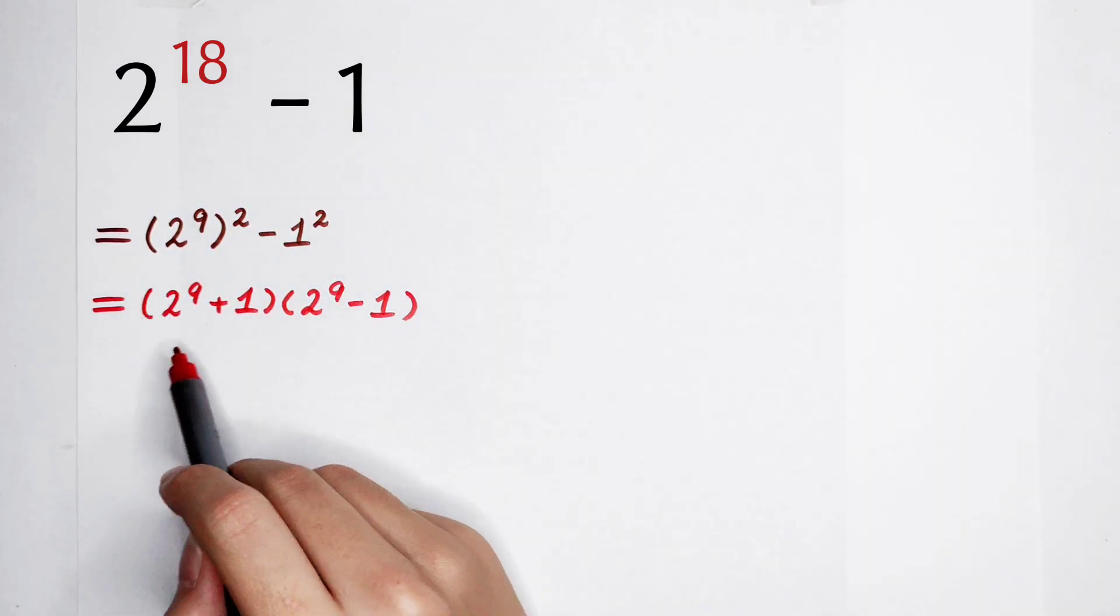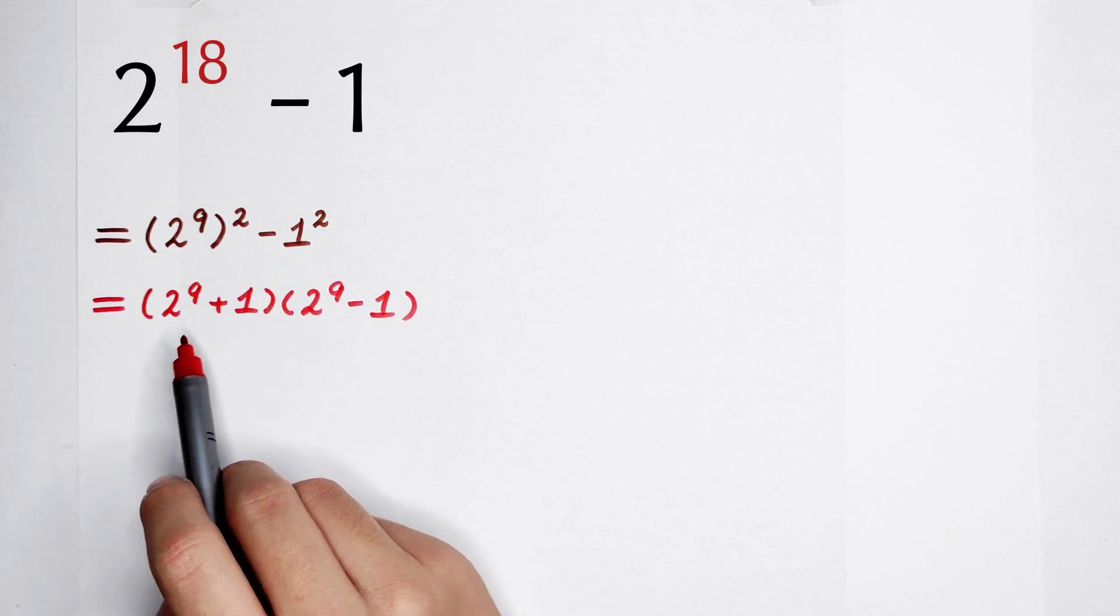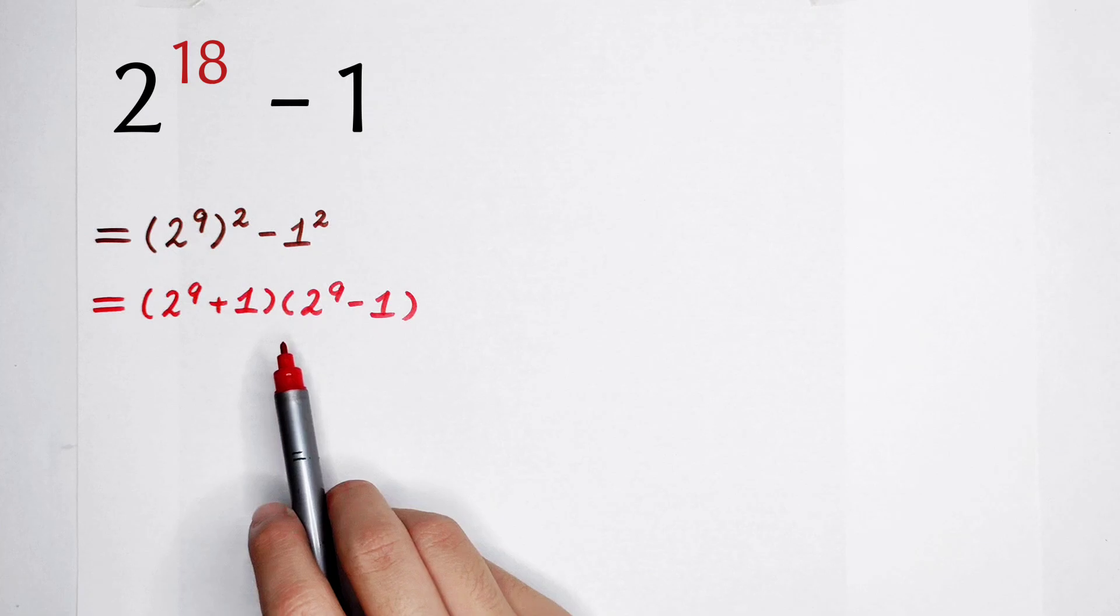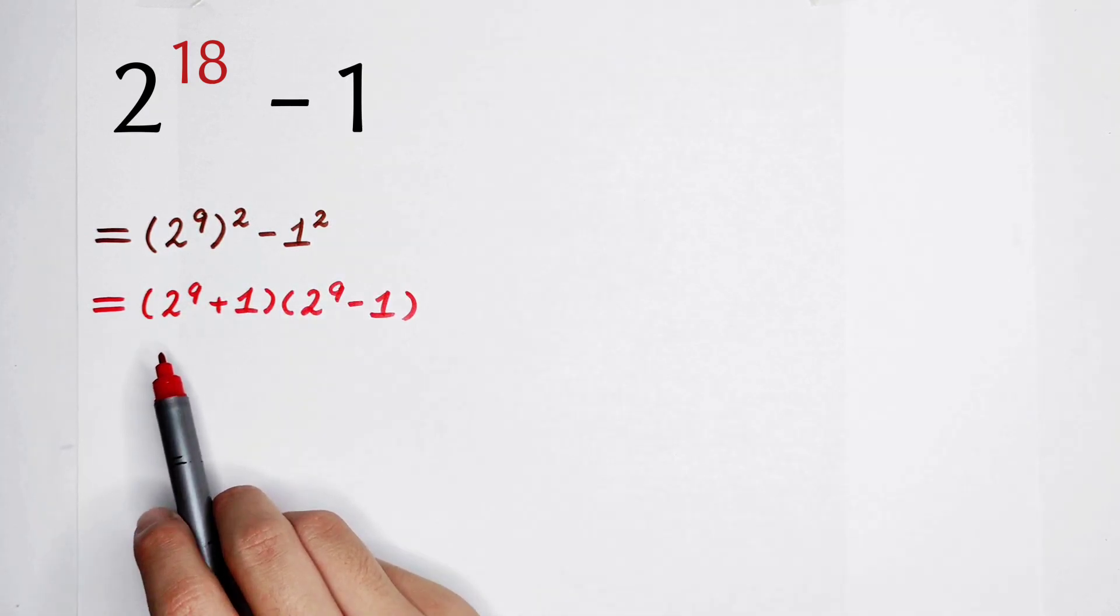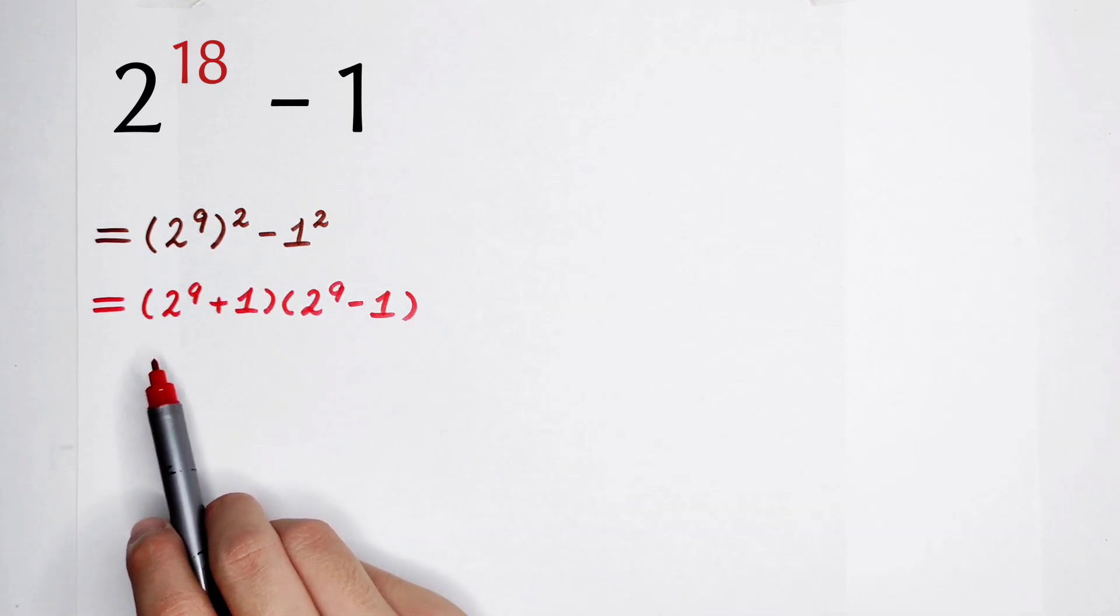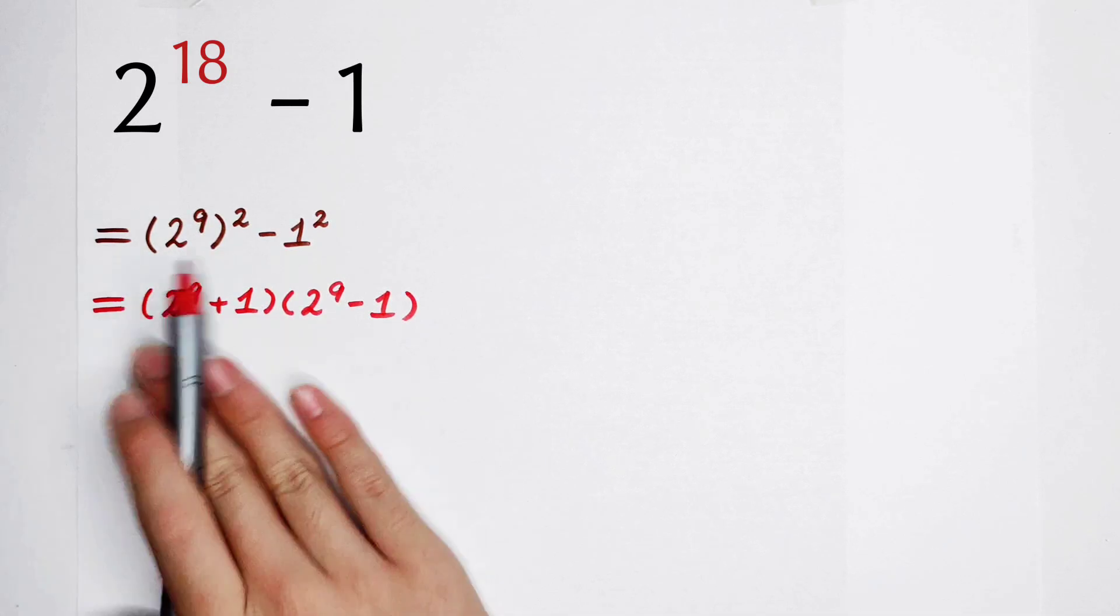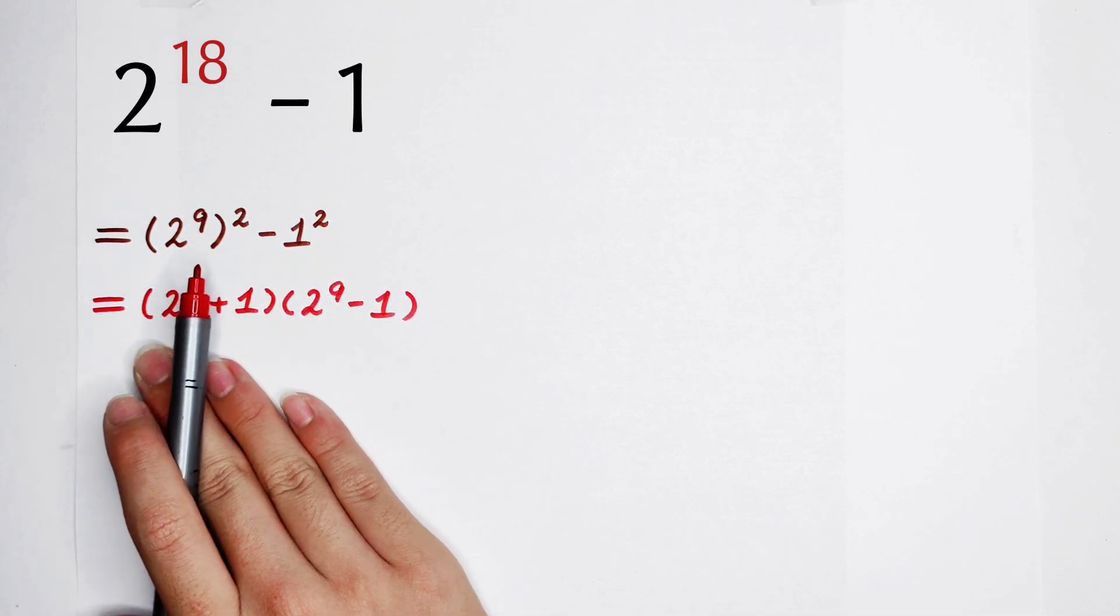What's the value of 2 to the power 9? 2 to the power 1 is 2, 2 to the power 2 is 4, 2 to the power 3 is 8, 2 to the power 4 is 16, 2 to the power 5 is 32, 2 to the power 6 is 64, 2 to the power 7 is 128, 2 to the power 8 is 256, and 2 to the power 9 is 512.